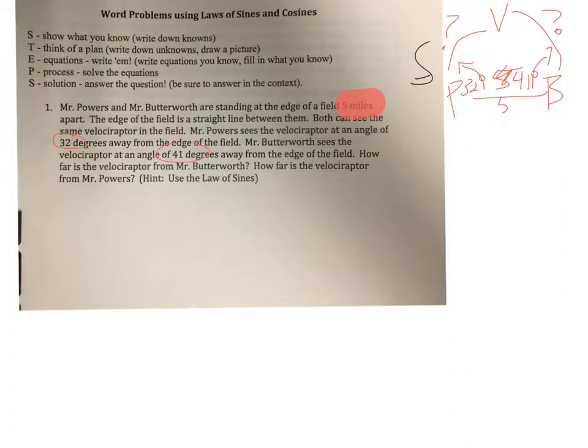For the think of a plan part, here's where we draw the triangle we're going to use. So, given that we're in law of sines and cosines land, this doesn't have to be a right triangle. I'm going to use the same three letters that I used for my sketch. P, V, and B for Powers, Butterworth, and Velociraptor. And I'm going to add in the pieces that I know. So we've got five miles. We've got 32 degrees. We've got 41 degrees.